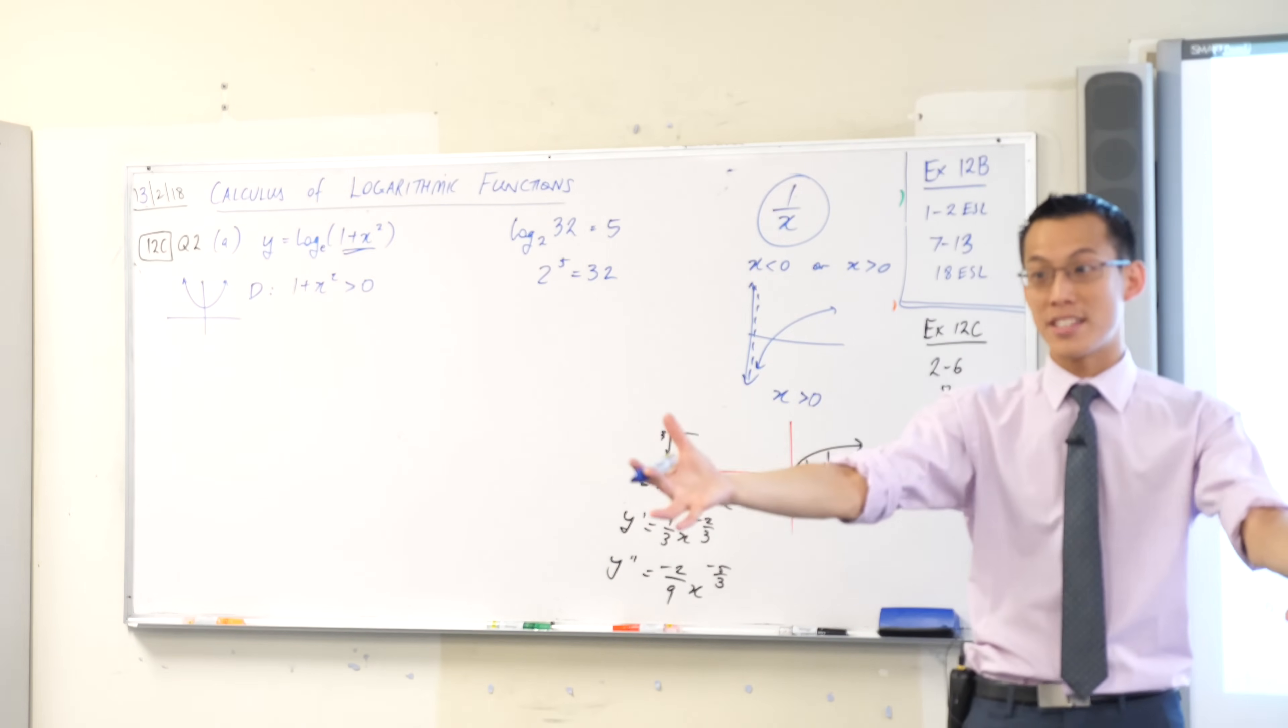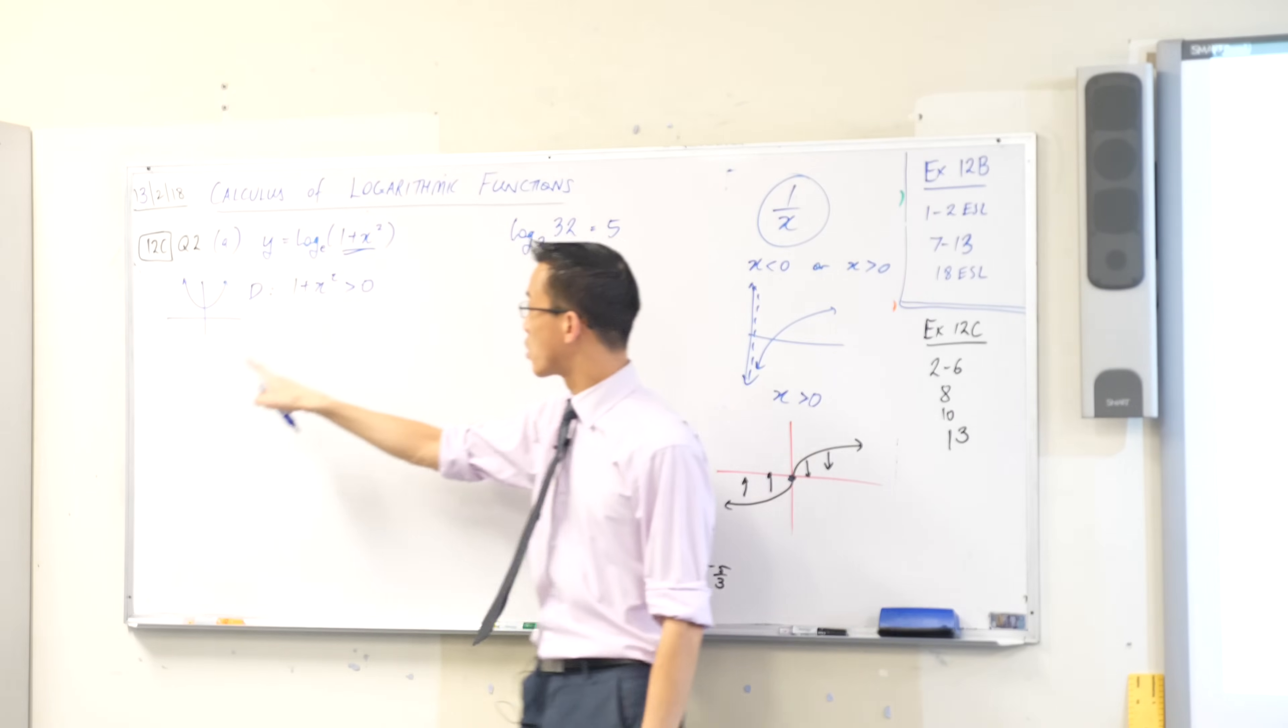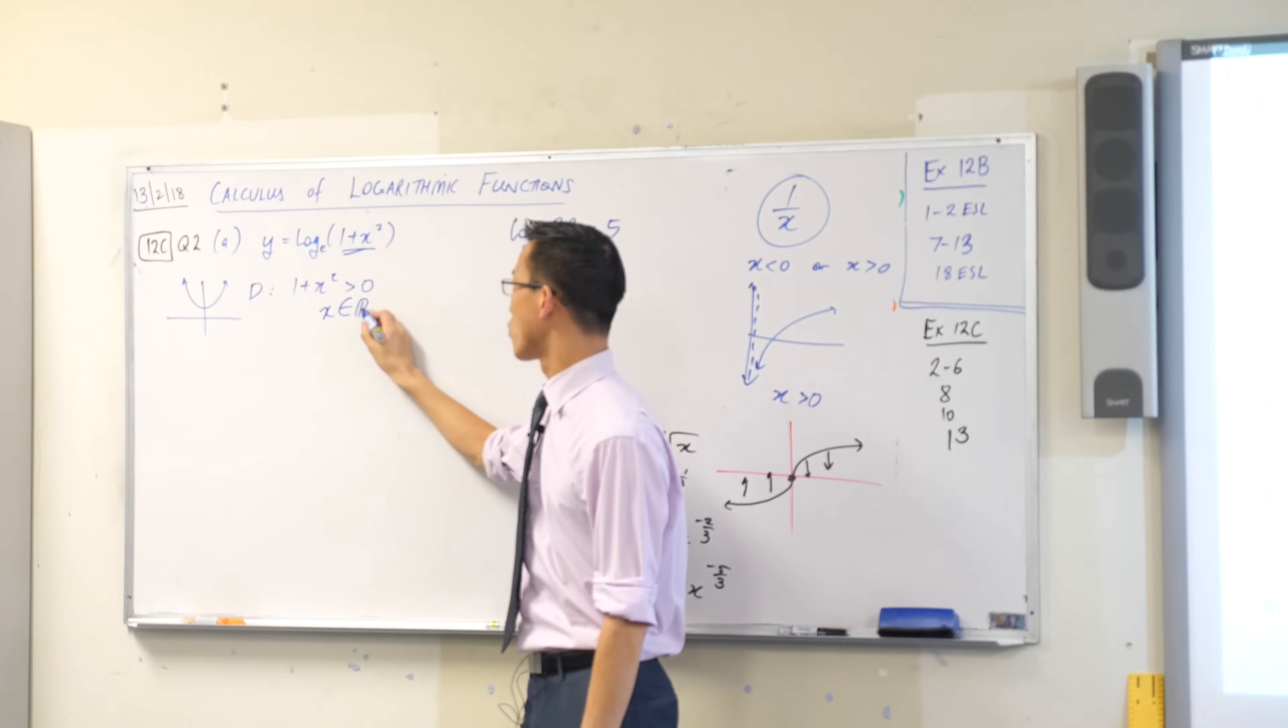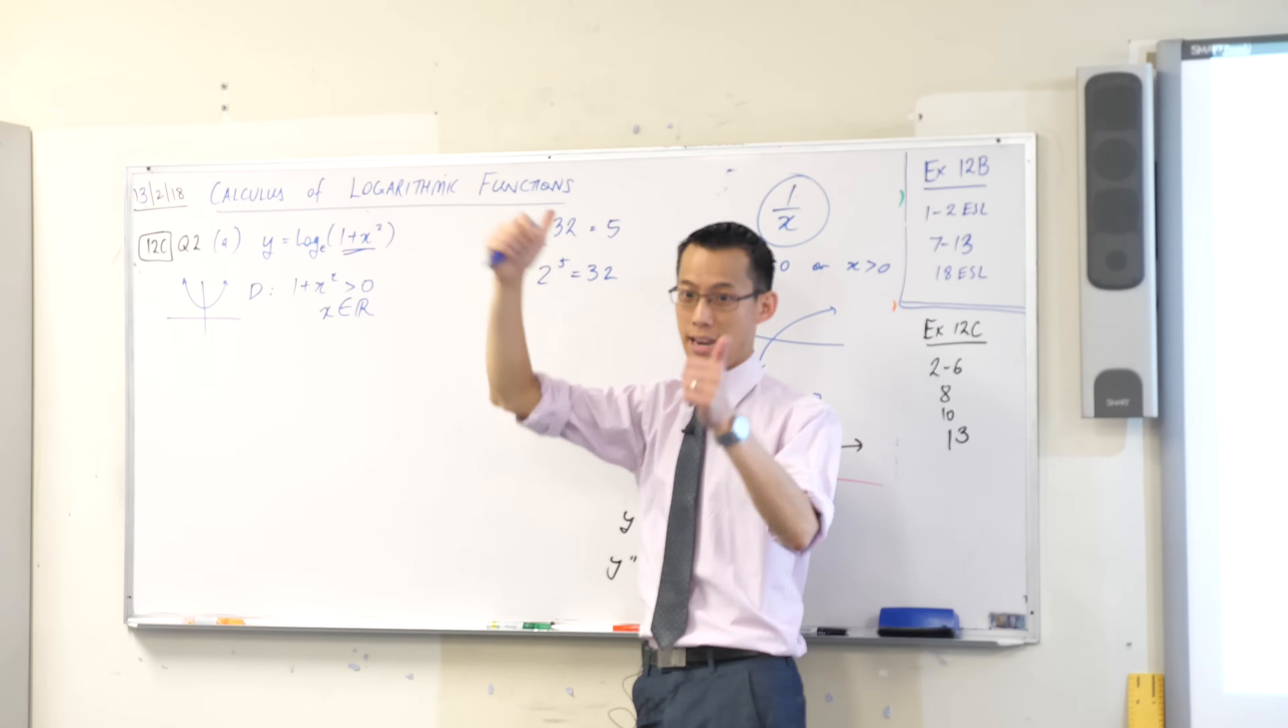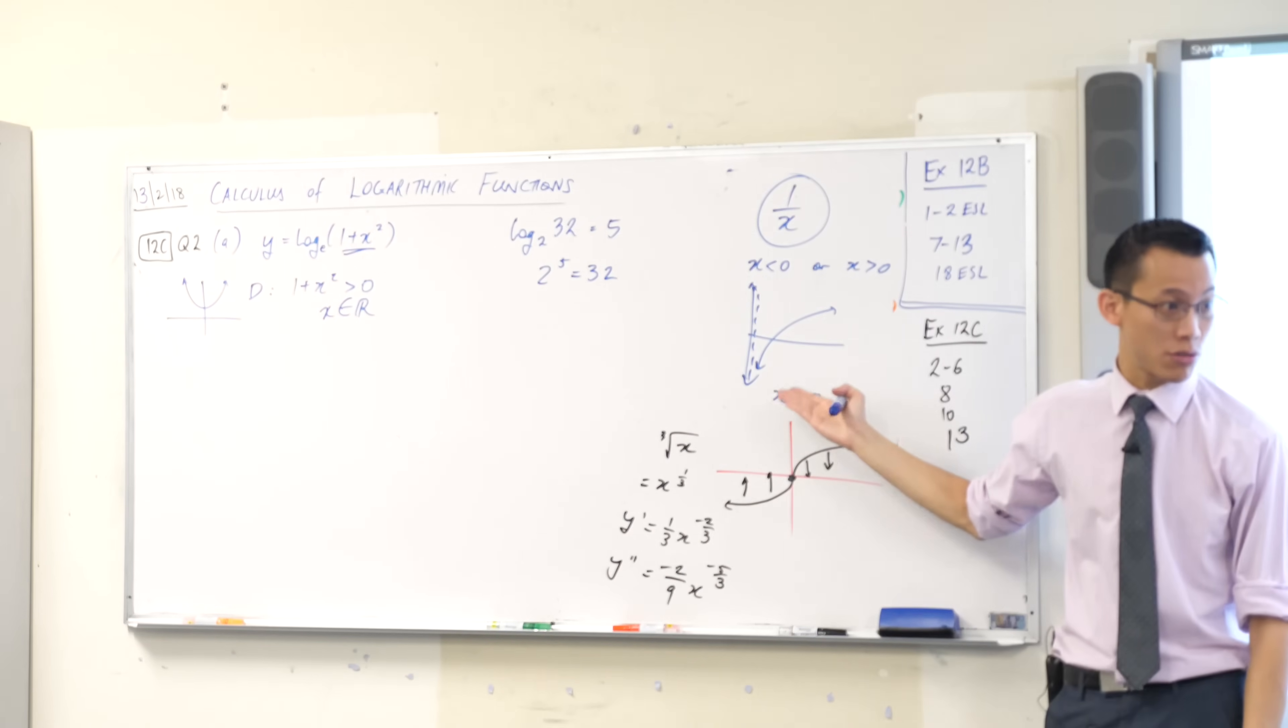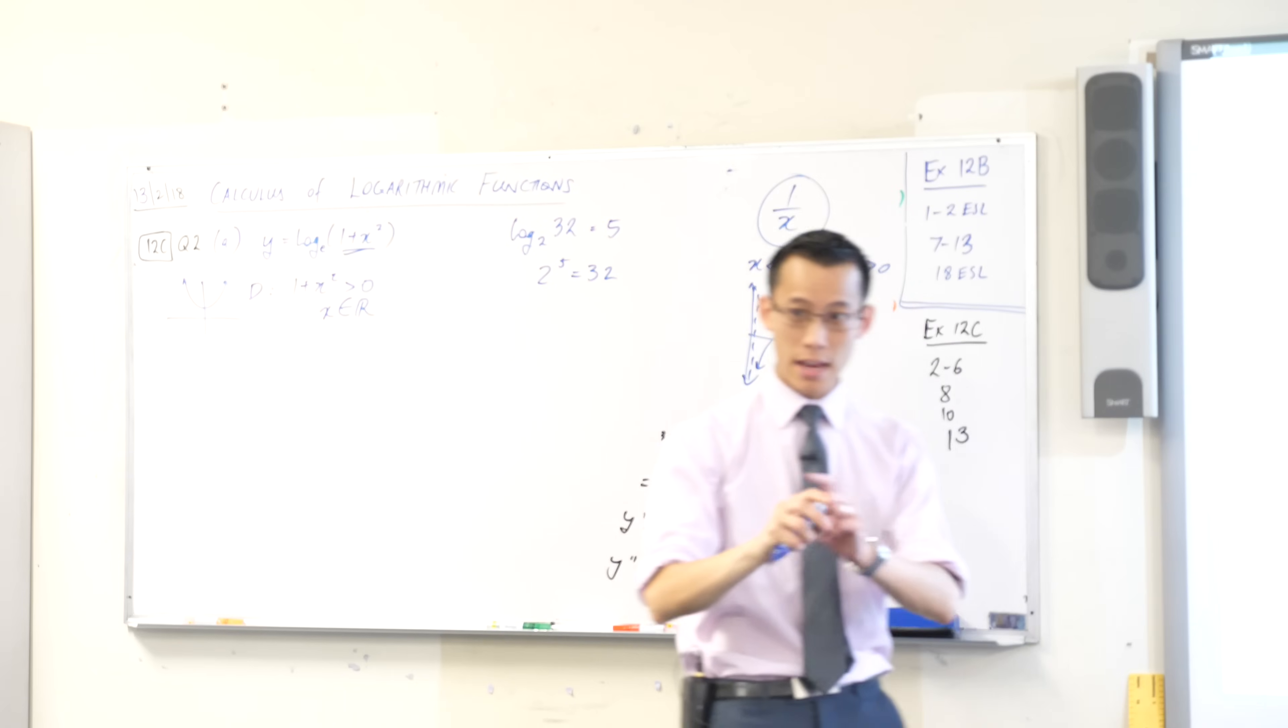And the answer is, it is always above zero. There is no part of this parabola that floats beneath the axis. So therefore, when is this true? And the answer is, any real values of x. It can exist anywhere. You can put any values of x in there, and it's happy. That's a bit weird, because we're used to logs having a domain restriction. But this guy does not. So there is part A, done.